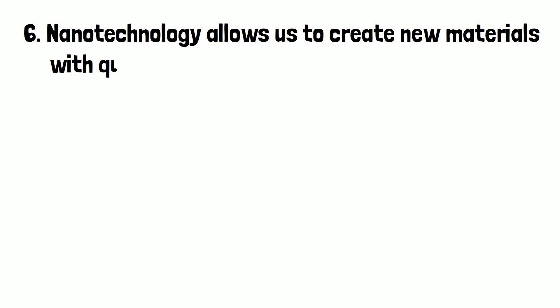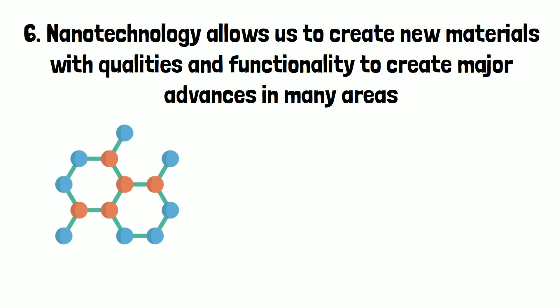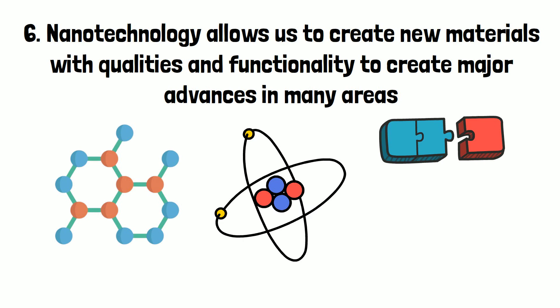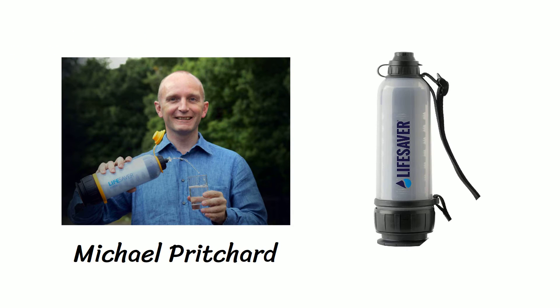Number 6. Nanotechnology allows us to create new materials with qualities and functionality to create major advances in many areas. Nanotechnology involves building things on an atomic scale. Using atoms as building blocks makes it possible to create unique materials. In 2009, Michael Pritchard created the simple design of the Lifesaver water bottle. This filter makes the water safe to drink without requiring expensive chemical or energy-intensive methods.